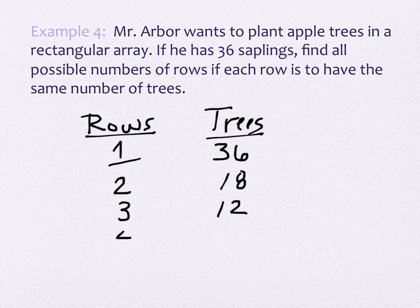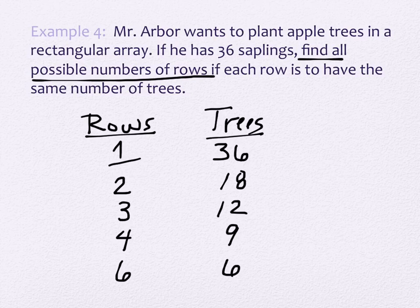What else could we have? Four rows with 9 trees. What else could we have? Six rows with six trees. And we could take this list and reverse it all as well. We could technically have 9 rows with 4 trees, but 9 rows with 4 trees is the same as 4 rows with 9 trees. So we've really gotten all of the options.